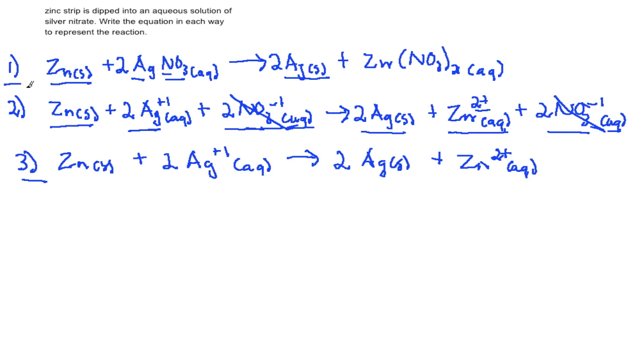So the very first step was writing our balanced chemical equation. The second step was writing our total ionic equation. And the third step was writing our net ionic equation.